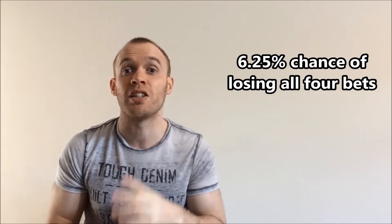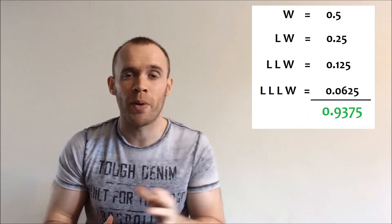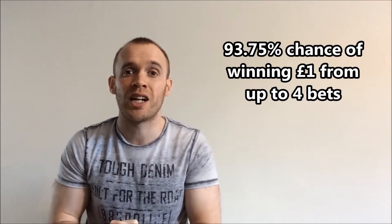So the aim of this strategy is to stop playing as soon as you win, so we need to work out the odds of winning on the first, second, third, or fourth attempt. Because the odds of winning and losing are the same, you'll recognize these numbers. But you add them all together and you get 0.9375 - in other words, you have a 93.75% chance of winning one pound.